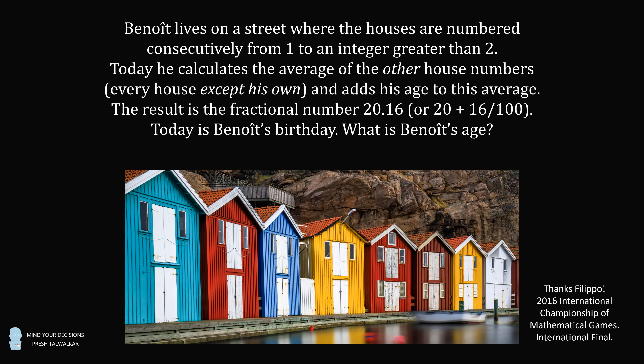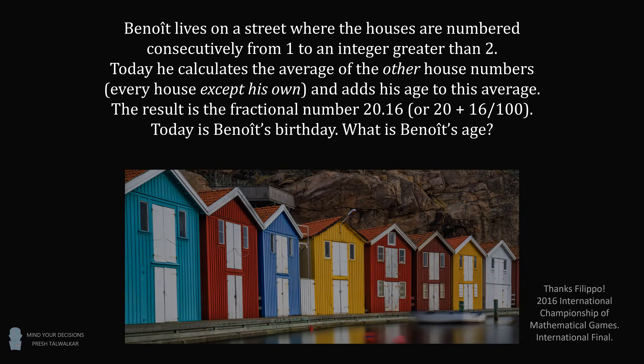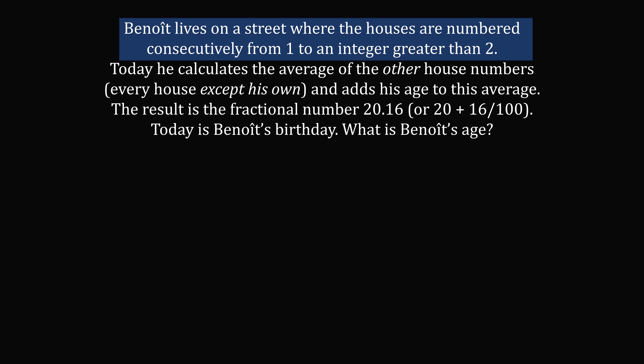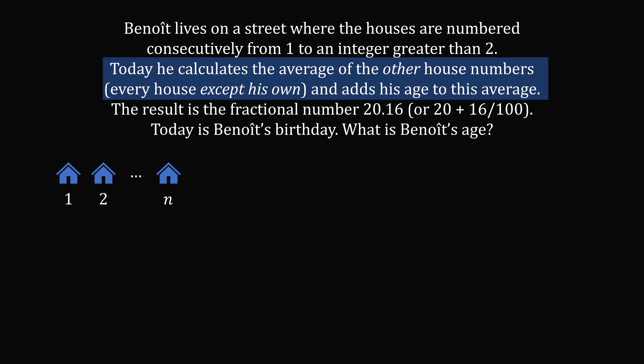So how can we solve this question? Let's work through it step by step. Benoit lives on a street where the houses are numbered consecutively from 1 to n, where n is the total number of houses. Today, he calculates the average of every house number except his own, and he adds his age to this average. Let's set up some variables: let B be Benoit's house number, and let A be Benoit's age.